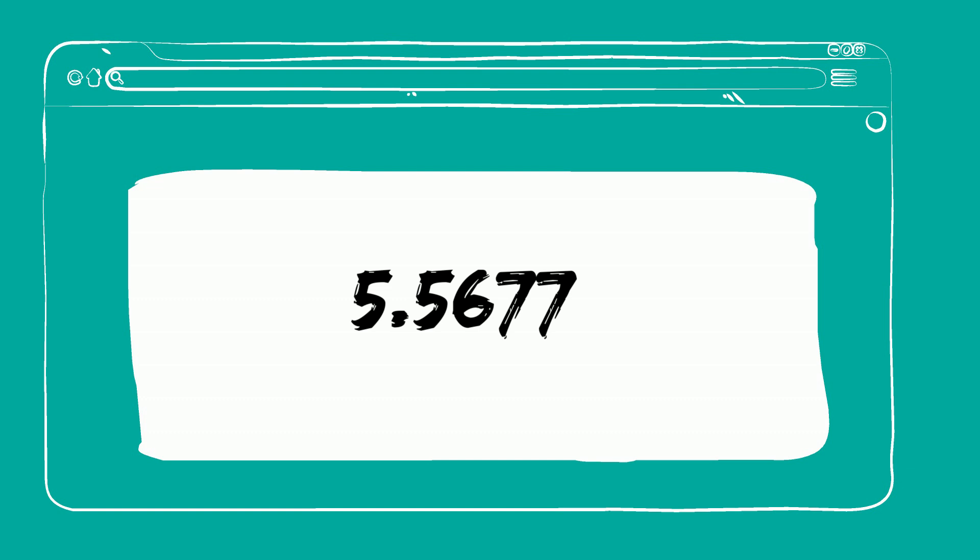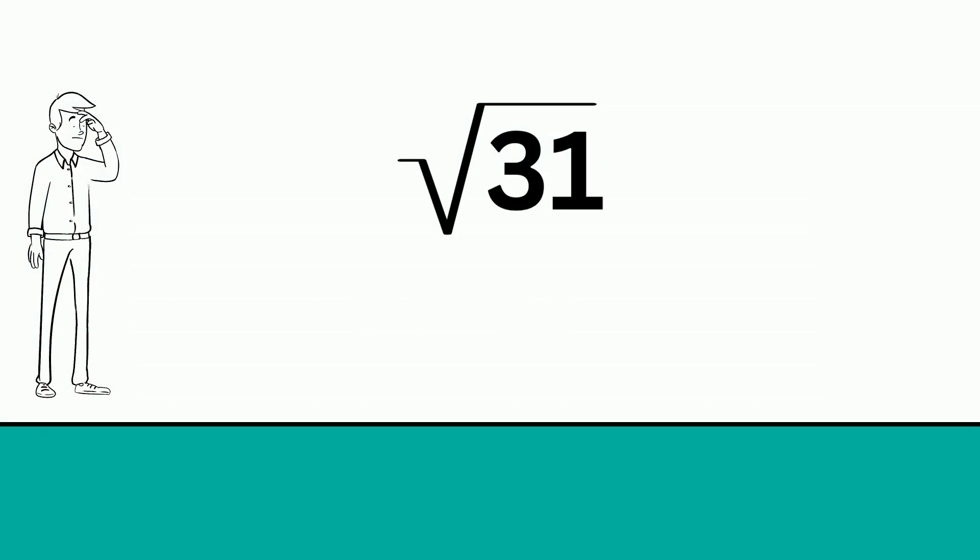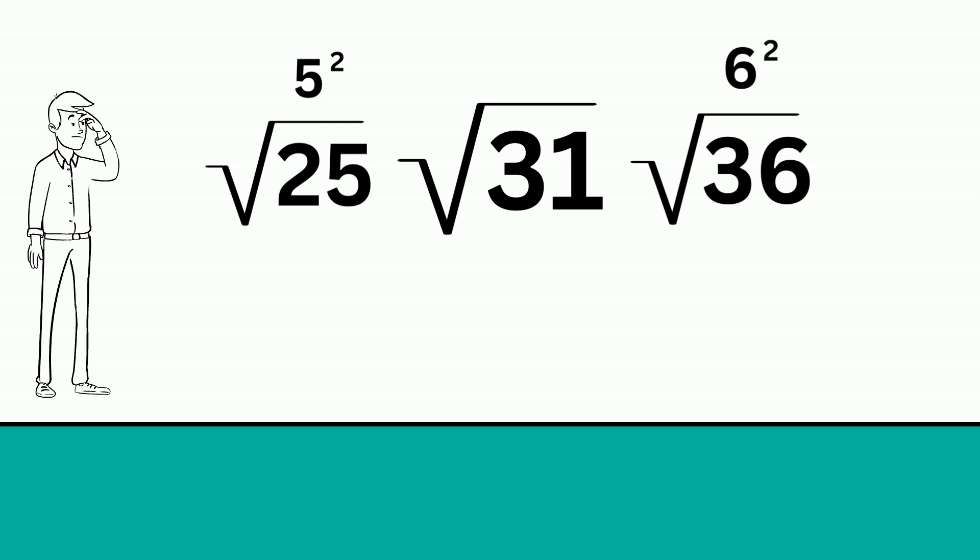If you would like to estimate the square root of 31, it falls between the square root of 25, which is 5 squared, and the square root of 36, which is 6 squared.